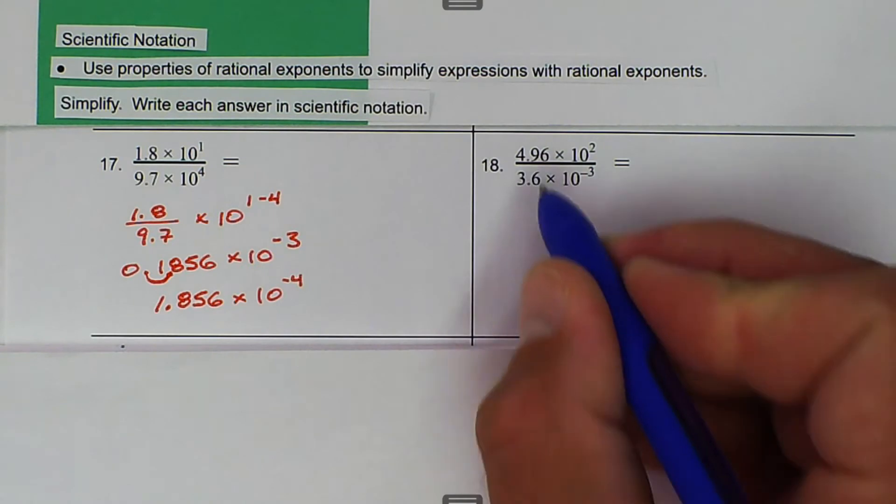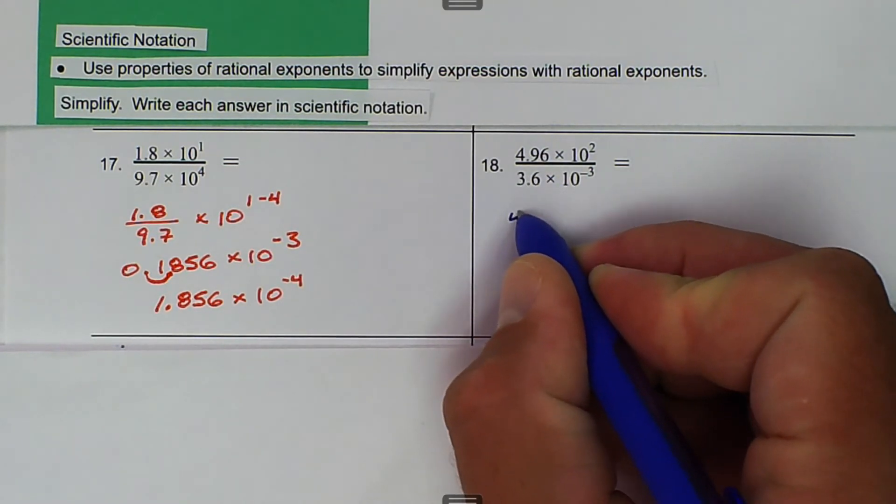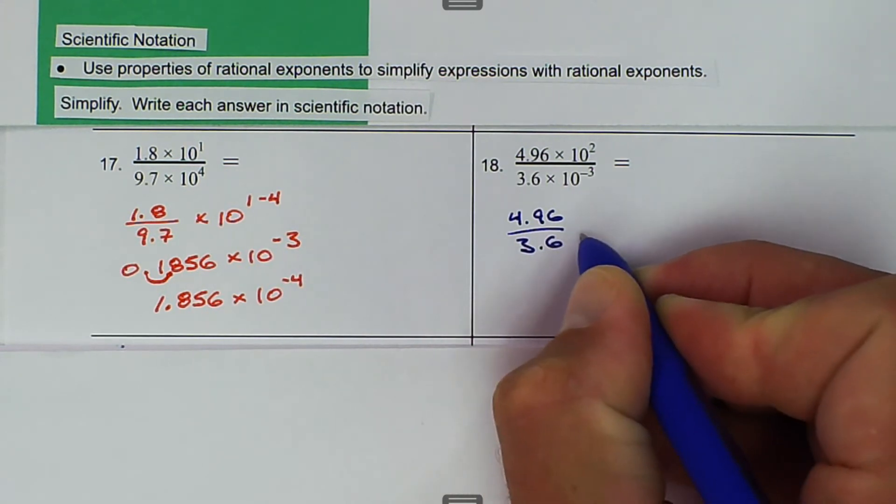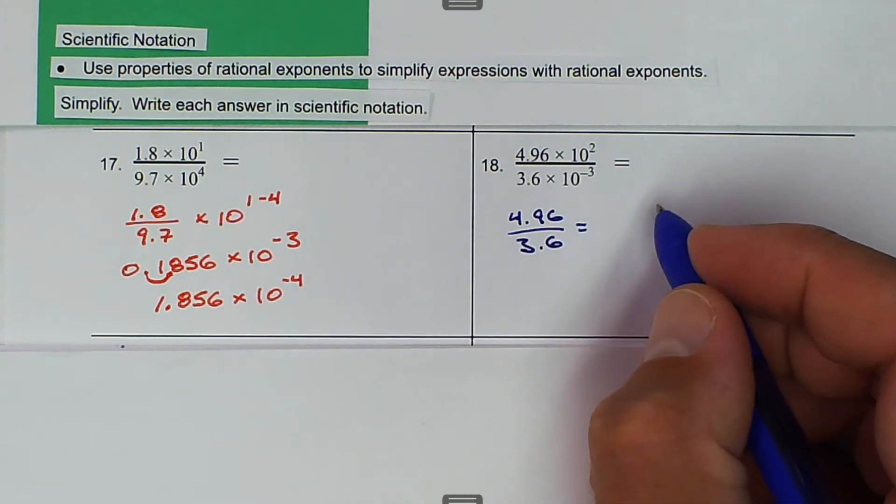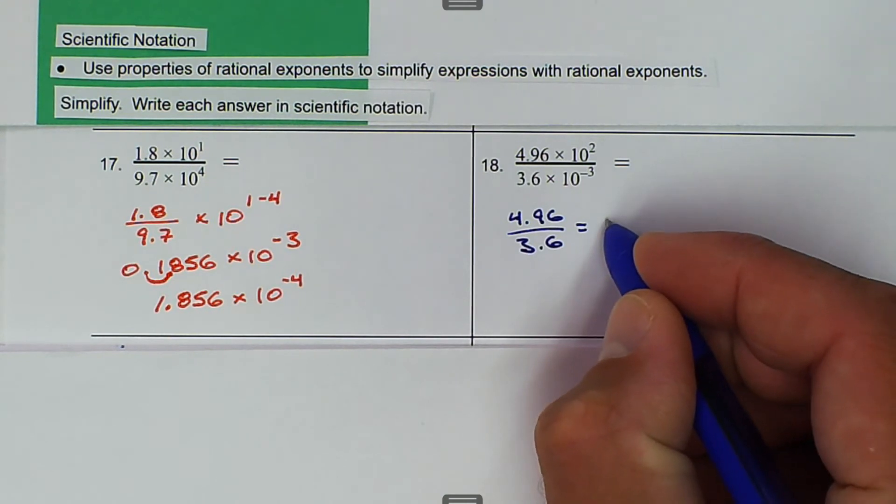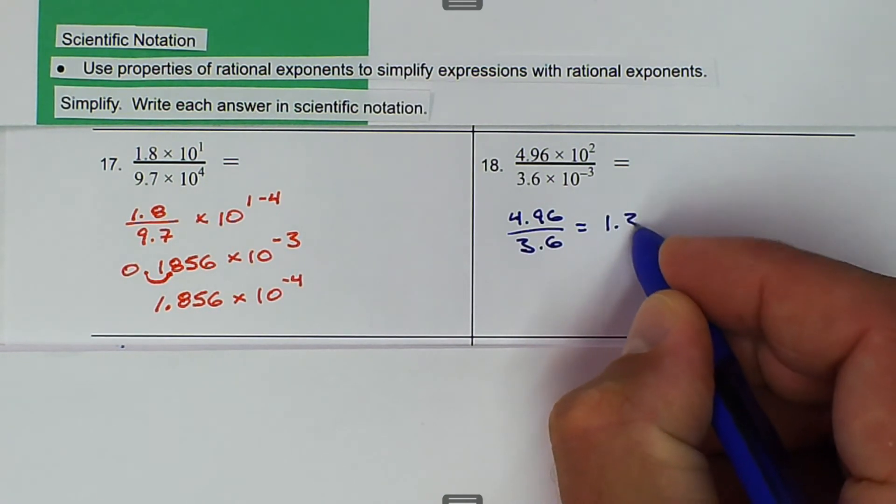We can do the same thing. We're going to take our numbers: 4.96 divided by 3.6. What we end up with is 1.38.